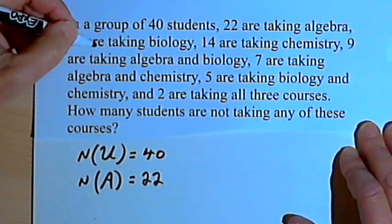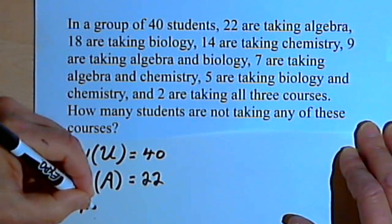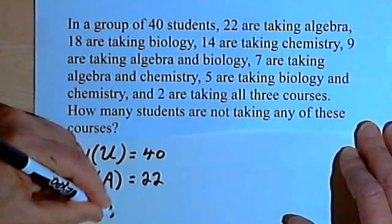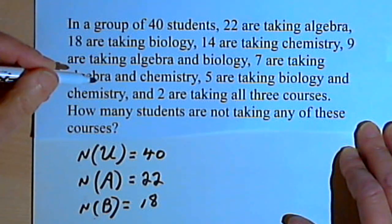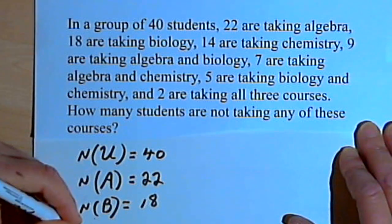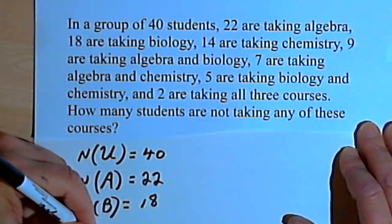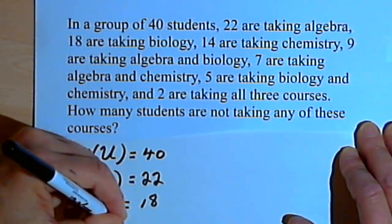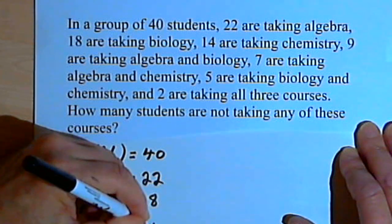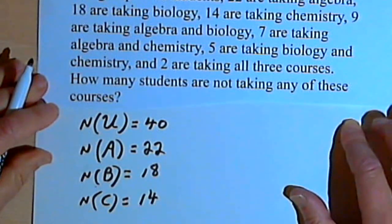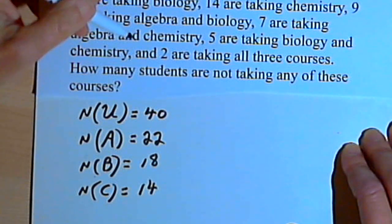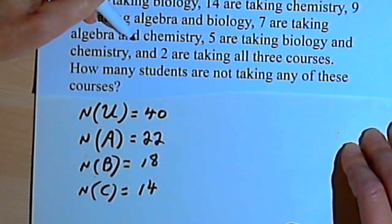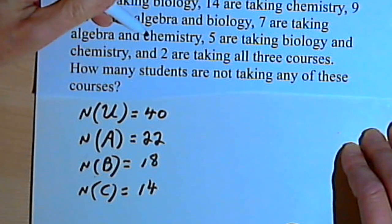18 are taking biology, so the size of what we'll call set B is 18. 14 are taking chemistry, so that's going to be set C, and that has 14 students. Now we've got some intersections. We've got 7 students taking algebra and chemistry, so that's the intersection of sets A and C.